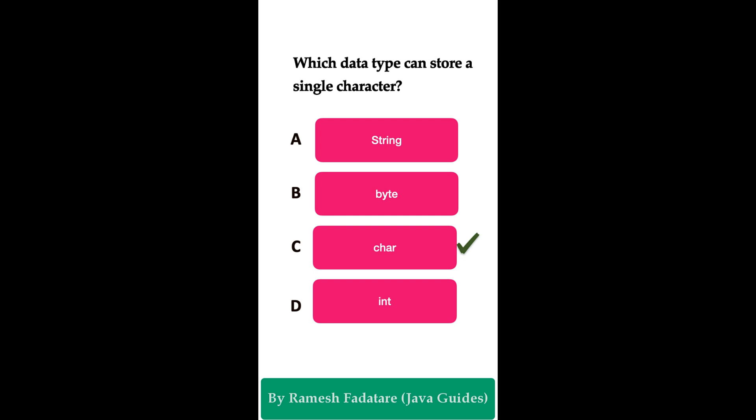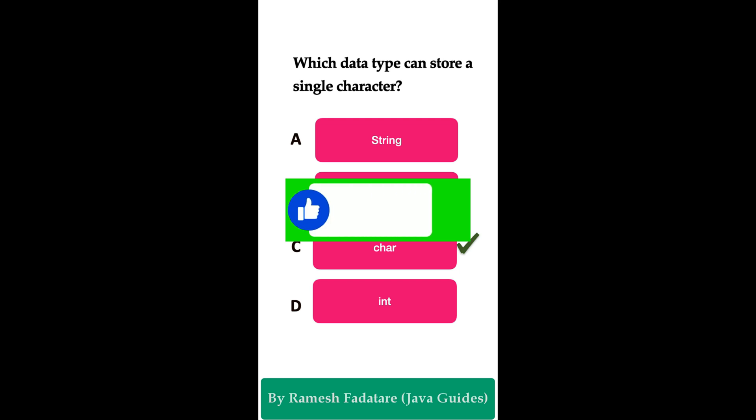In Java, the char data type is used to store a single character. It is a primitive data type representing a single 16-bit Unicode character. The char data type can store any single character such as a letter, digit, punctuation mark, or control character, enclosed within single quotes.